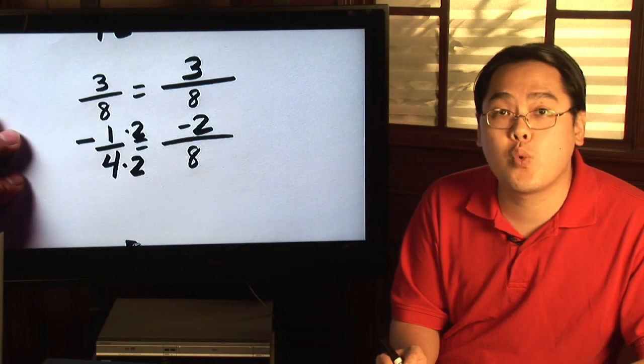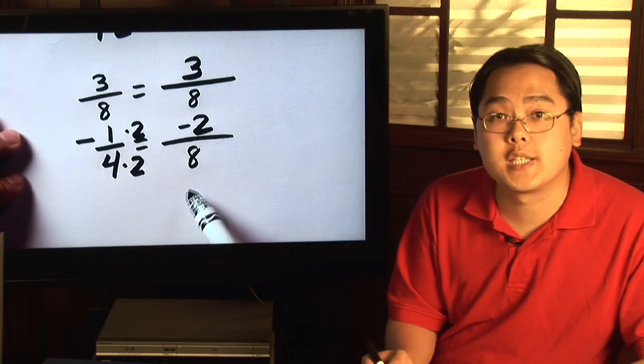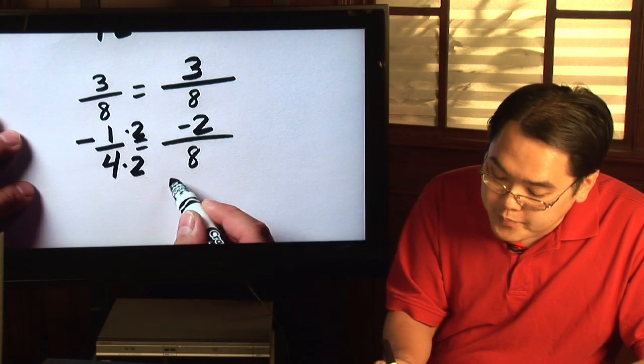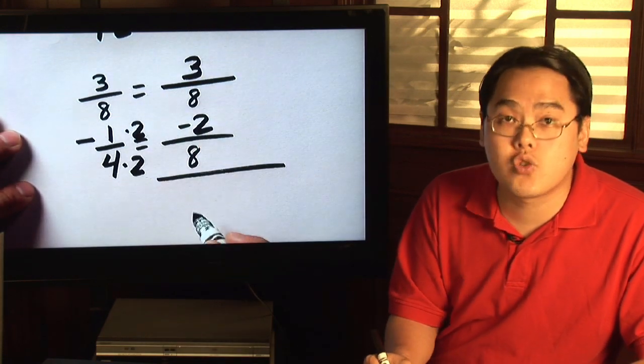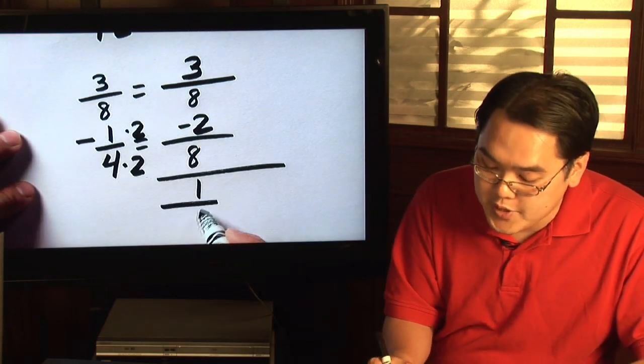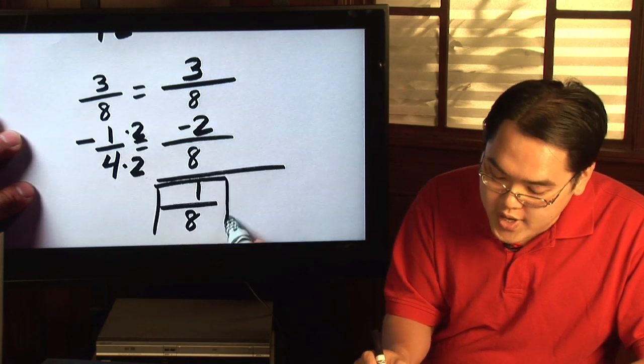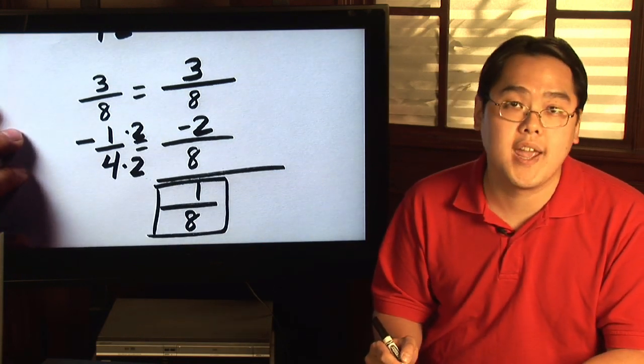So 3/8 minus 1/4 is really 3/8 minus 2/8. And just like we did above, you subtract across but keep the denominator as is. So 3/8 minus 1/4 equals 1/8.